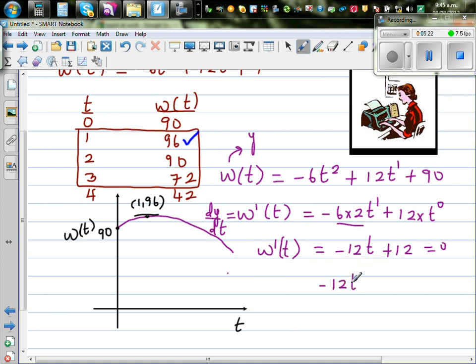So this is -12t + 12 = 0. Solving this equation, -12t = -12, t = -12 divided by -12, which is 1. So after one minute she reaches the maximum speed, and then it's dropping down.